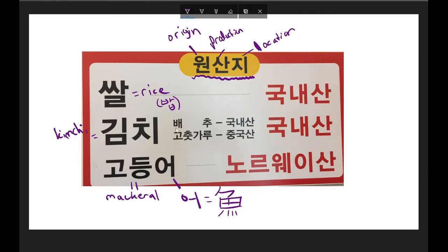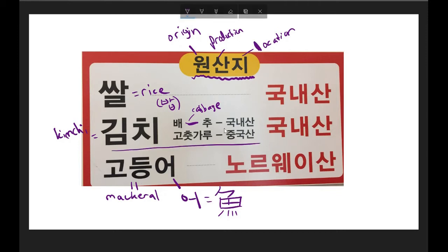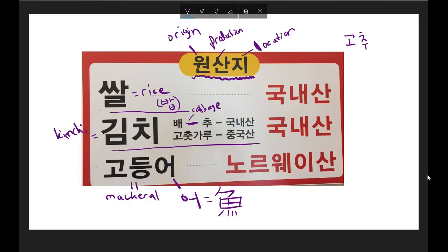배추 (baechu) means cabbage — specifically the type of cabbage used in kimchi. That's why it appears next to kimchi on the sign: they're telling you where the cabbage in the kimchi comes from. Then this word here I'll break into two parts: the first part is 고추 (gochu), which refers to a hot pepper — like a green pepper but spicy, with a little stem. Korean people use it in a lot of dishes.